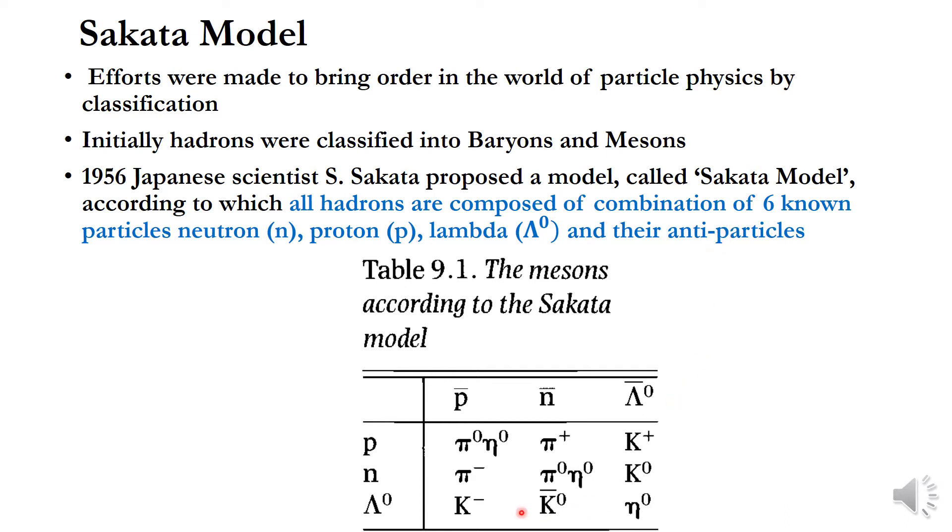So you can see this is the Sakata model of mesons. This P and P bar means the proton and antiproton produces this pi zero and eta zero. This neutron and P bar produces this pi minus. This lambda zero and P bar produces this K minus. And this P and N bar produces this pi plus. And this P and lambda zero bar produces this K plus.